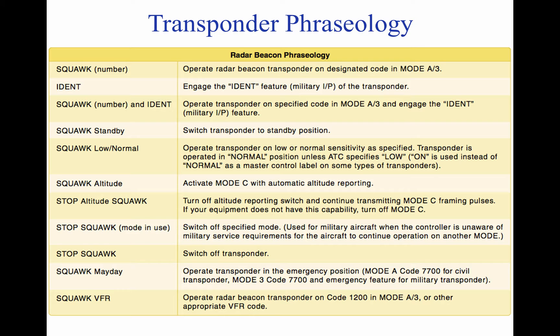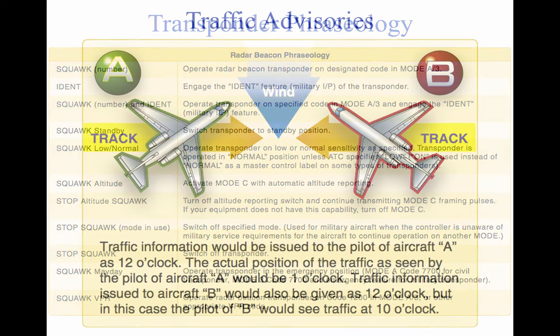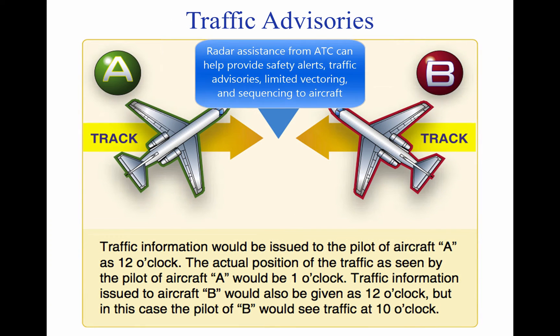Radar Traffic Advisories. Radar-equipped ATC facilities provide radar assistance to aircraft on instrument flight plans and VFR aircraft, provided the aircraft can communicate with the facility and are within radar coverage. This basic service includes safety alerts, traffic advisories, limited vectoring when requested, and sequencing at locations where this procedure has been established.